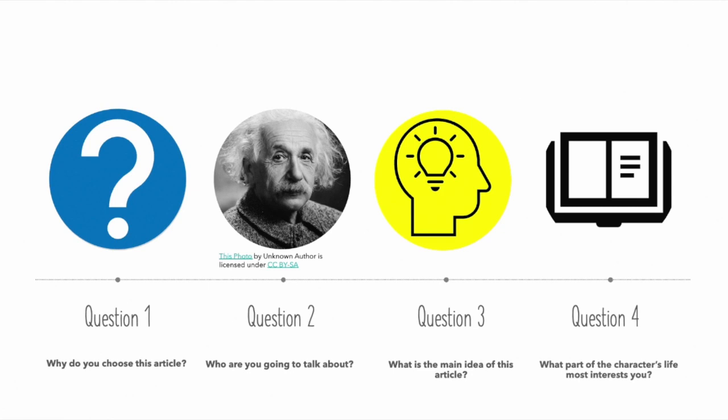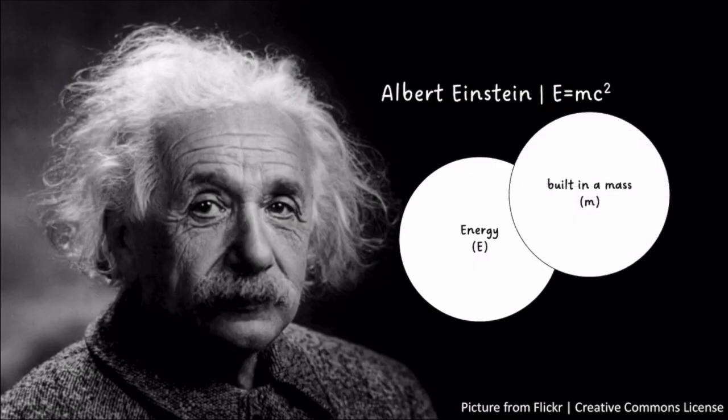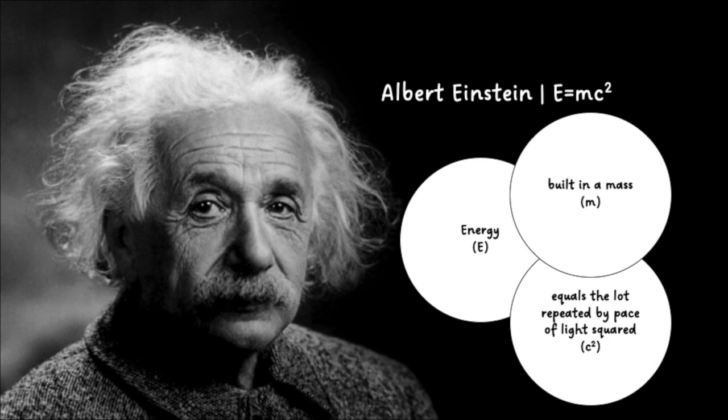The part of Einstein's life that I'm most interested in is when he presented his famous formula, E equals mc squared, meaning energy built in a mass equals the lot repeated by pace of light squared. It was used to calculate the speed of light.